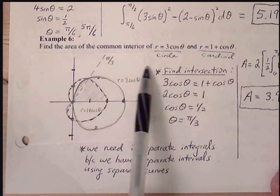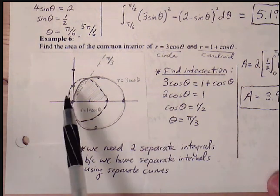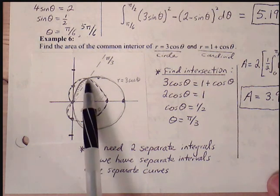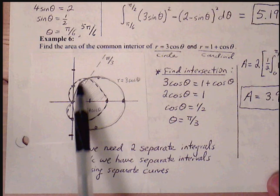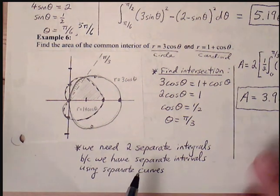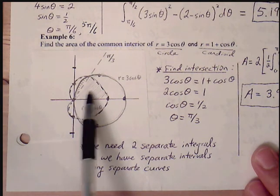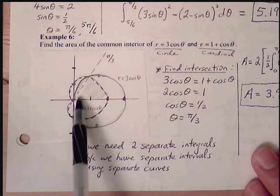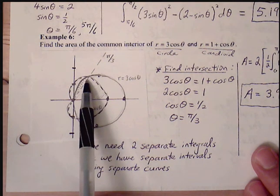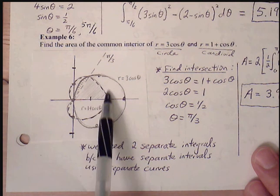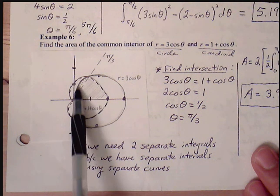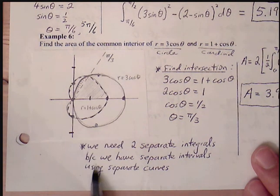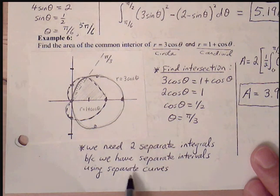Example 6: Find the area of the common interior between the circle and the cardioid — the overlapping region between them. We'll use symmetry again: find half the area and then double it. Drawing radial lines, from 0 to the intersection point we use the cardioid, but in the sliver region beyond that the radial lines hit the other curve, r equals 3 cosine of theta. So we need two separate integrals with separate intervals and separate curves.